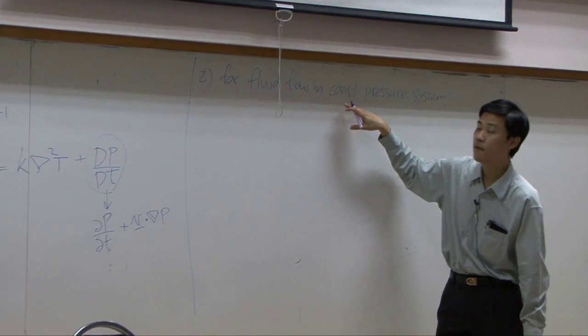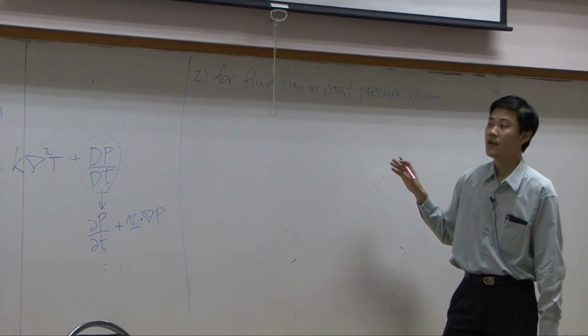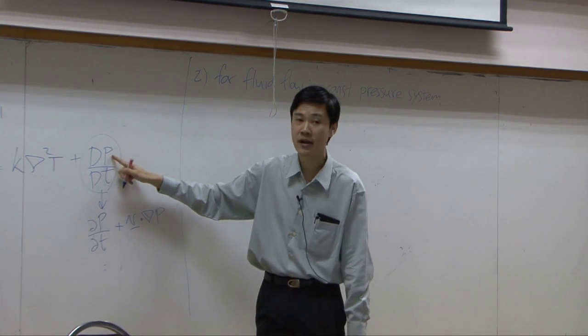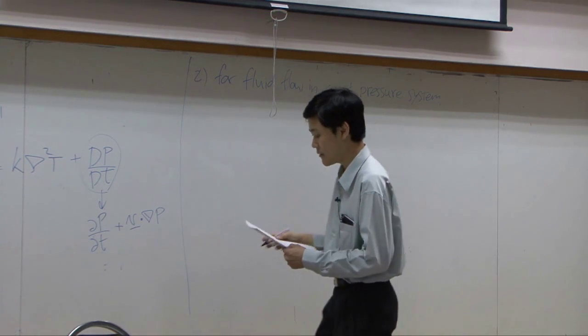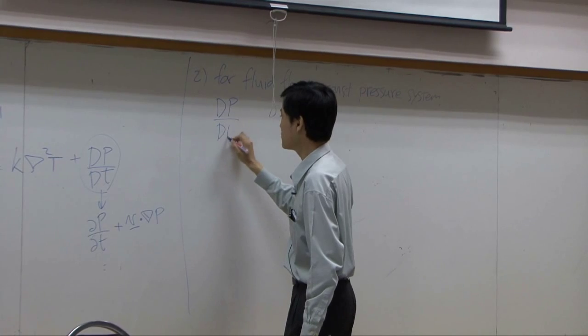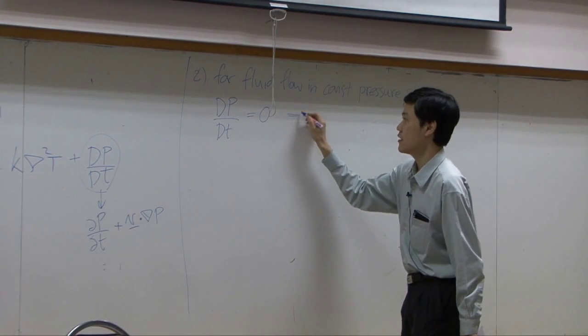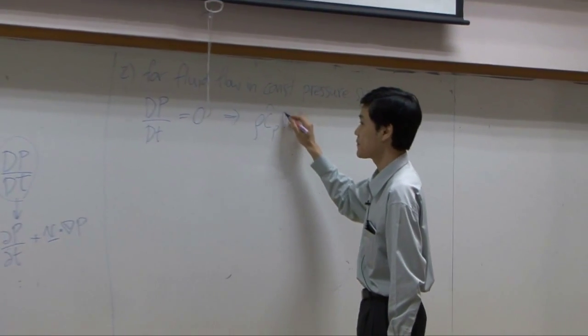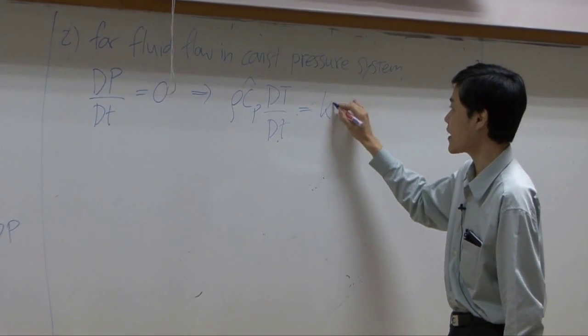So for fluid flowing in relatively constant pressure, this term will be dropped because pressure does not change much in your system. So what we have here would be differential of pressure with respect to time becomes zero. And then what you get would be rho Cp dT by dt should equal to conduction only.